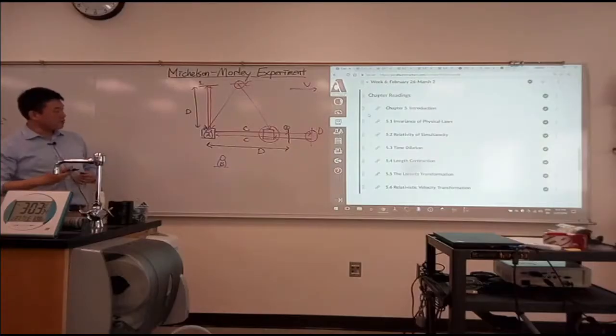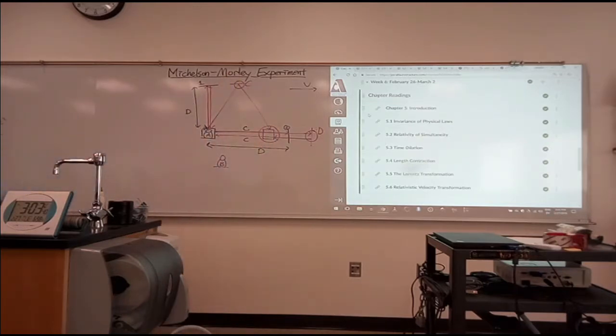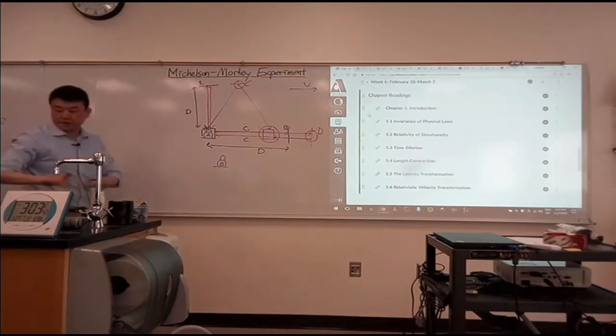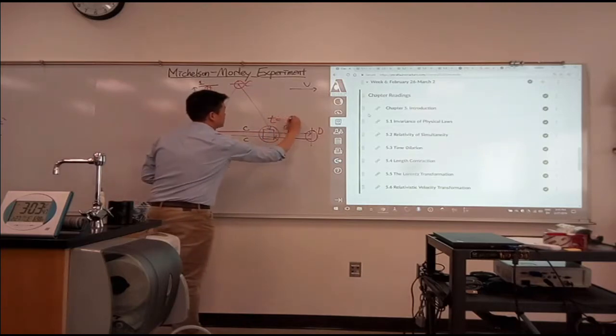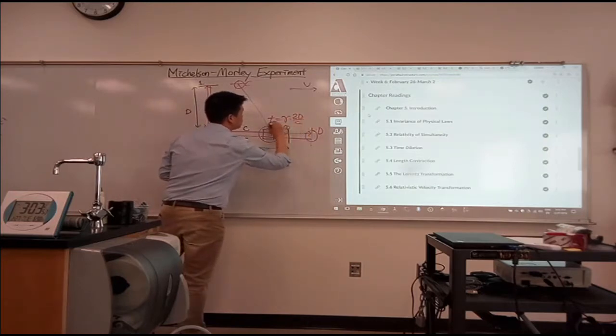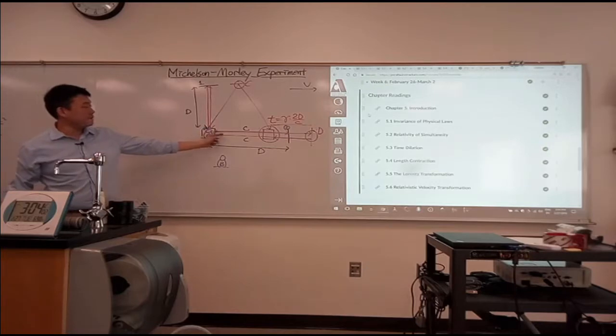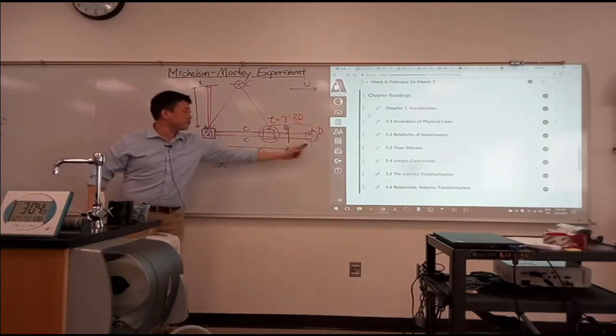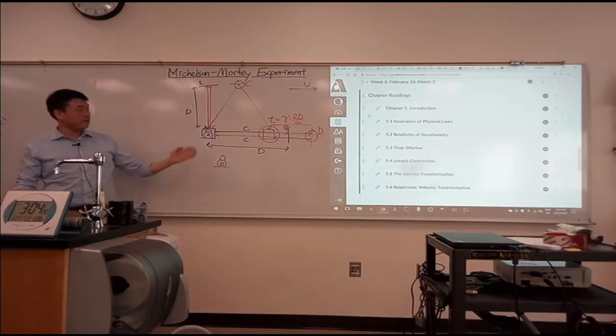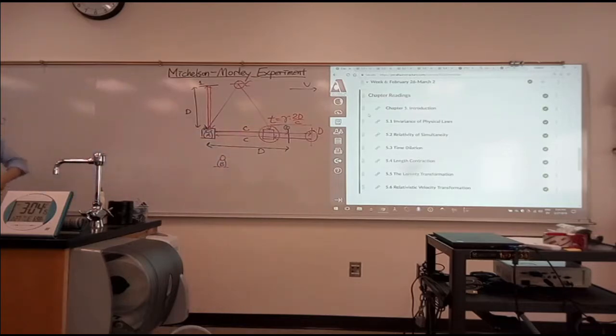So let me do the calculation. I know the round trip time for the upper arm is T equals gamma times 2D over C. That's what we did with the time dilation. That's kind of why we had to do the time dilation first. And let's try to figure out how much time this round trip should take. And we will say that whatever round trip time this takes must be equal to this.